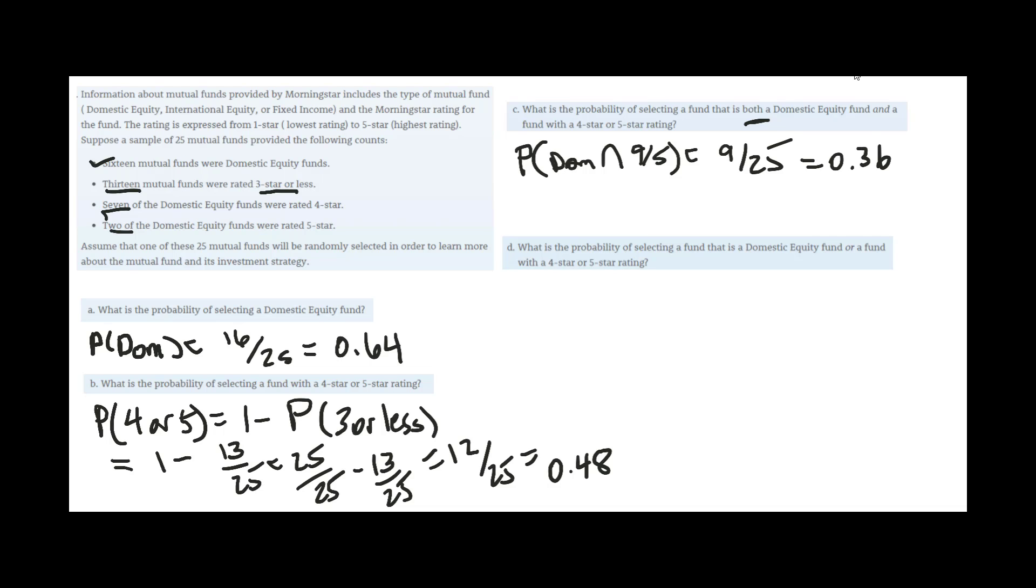What is the probability of selecting a fund that is a domestic equity or a fund with a 4 star or 5 star? So the or is the union. So I'm looking at the probability of the domestic equity or the 4 and 5 star. So remember you get the probability of the domestic equity, which is the first part, 16 over 25.